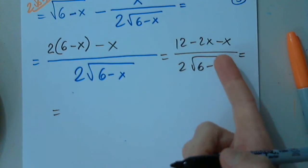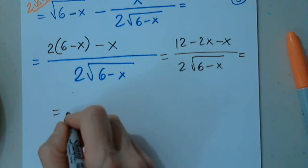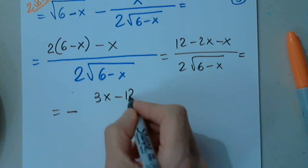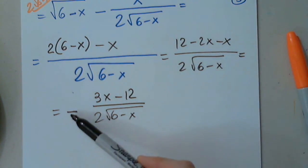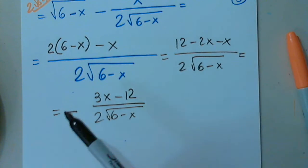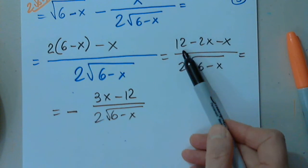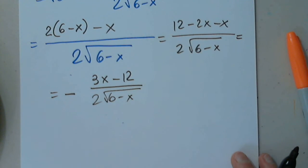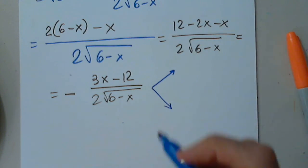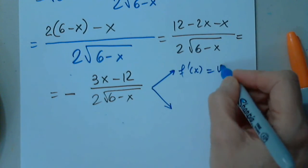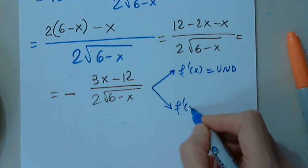So f'(x) = (−3x + 12) / (2√(6−x)), or equivalently −3(x − 4) / (2√(6−x)). There are two sources of critical numbers: f'(x) undefined and f'(x) = 0. The derivative is undefined at x = 6 — the function is defined there but the derivative is not — so x = 6 is a critical number.